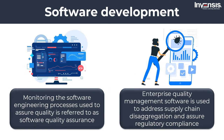In software development and software testing, monitoring the software engineering processes and procedures used to assure quality is referred to as software quality assurance. For this, many approaches or frameworks are used, such as guaranteeing adherence to one or more standards such as ISO 25010, which replaces ISO/IEC 9126, or process models like CMMI or SPICE. Enterprise quality management software is also used to address challenges like supply chain disaggregation and assure regulatory compliance.